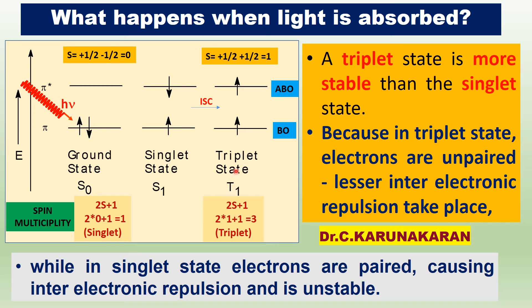For the triplet state, S equals plus one-half plus one-half equals one. Therefore, 2(1)+1 equals three — the spin multiplicity is three, which is why it is called the triplet state.